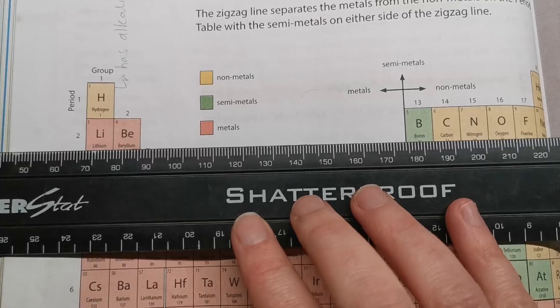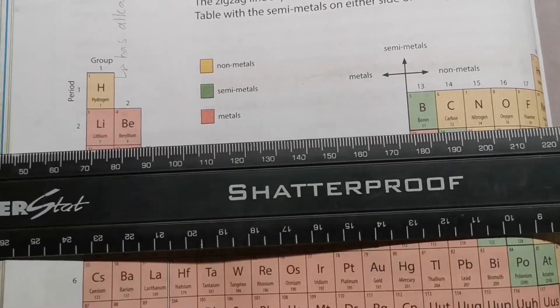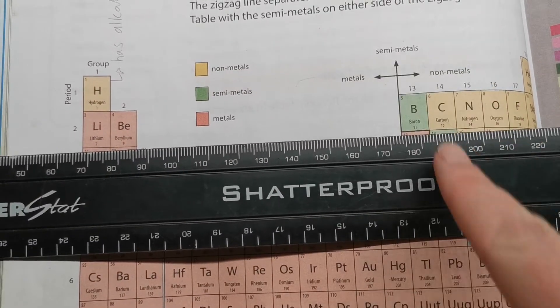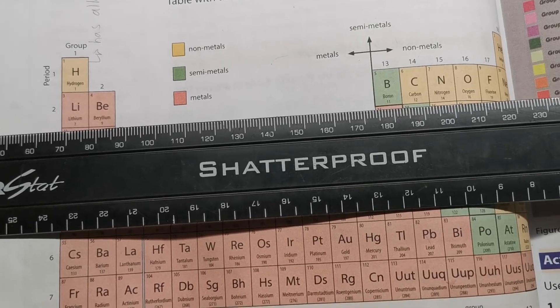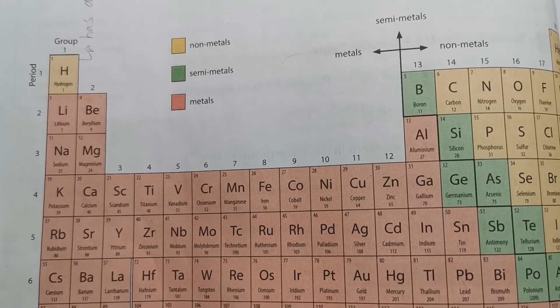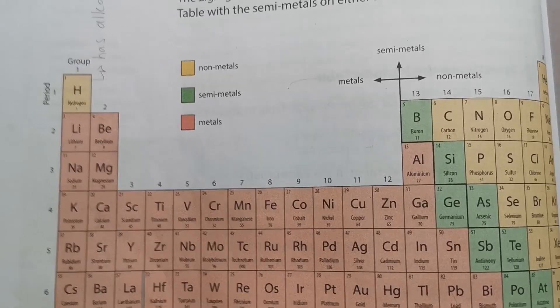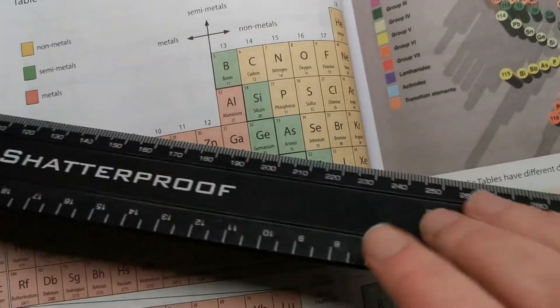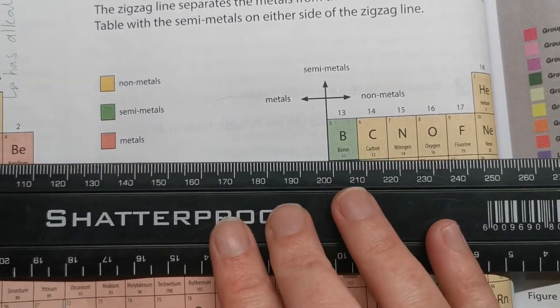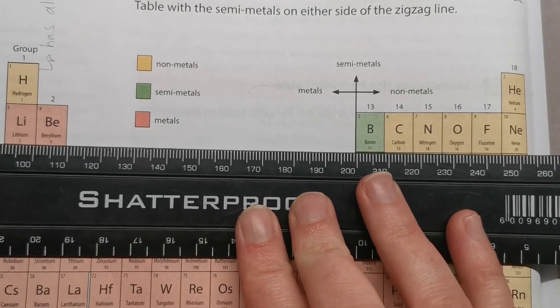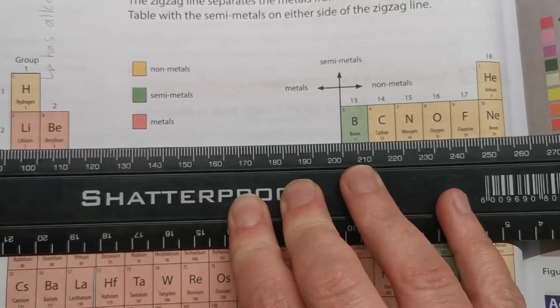All the ones going across are known as periods. All the ones going up and down is known as groups. Okay, so you might get a question saying, what elements are in the same period as carbon? So you can put your ruler over here.